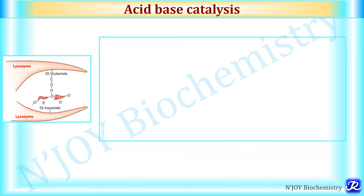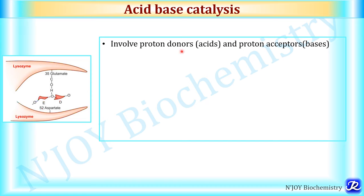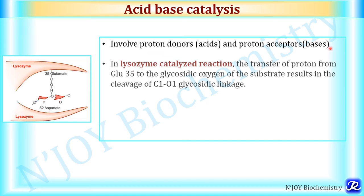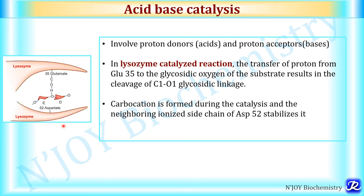The second mechanism of enzyme catalysis is acid-base catalysis, which involves proton donors (acid) and proton acceptors (base). In the lysozyme-catalyzed reaction, transfer of a proton from glutamate 35 to the glycosidic oxygen of the substrate results in cleavage of the C1–O1 glycosidic linkage. A carbocation is formed during catalysis and the neighboring ionized side chain of aspartate 52 stabilizes it. Another example of acid-base catalysis is the action of ribonuclease.